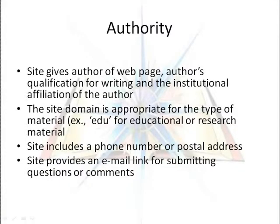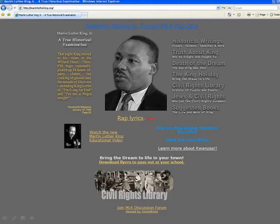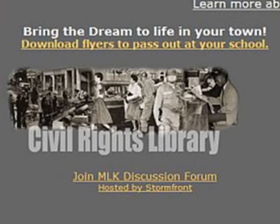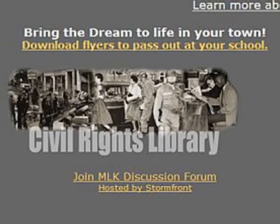The next criteria is authority. Can we identify the authors and their qualifications? Is the site domain appropriate? Back at our Martin Luther King page, we look at the bottom of the screen to see if we can find the author. It's hosted by Stormfront, and there's a link to their homepage. The page has an ORG domain, so Stormfront must be a non-profit.